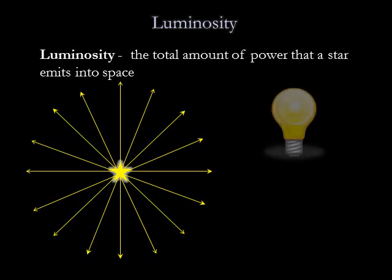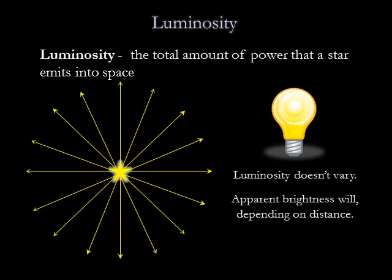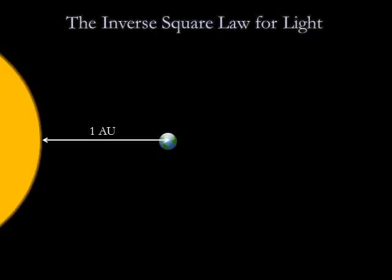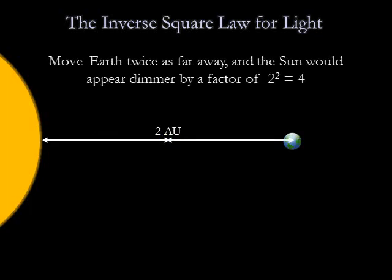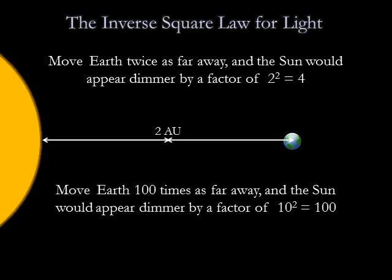For example, a 100-watt light bulb always puts out the same amount of light. Its luminosity doesn't vary, but its apparent brightness will depend on how far away you are from the bulb. The apparent brightness of a star, or any light source, obeys an inverse square law with distance, much like the inverse square law for the force of gravity. For example, if we viewed the Sun from twice Earth's distance, it would appear dimmer by a factor of 2 squared, or 4. If we viewed it from 10 times Earth's distance, it would appear dimmer by a factor of 10 squared, or 100.